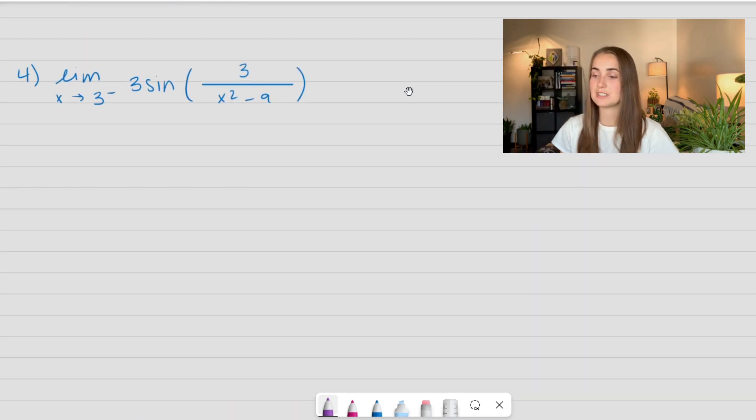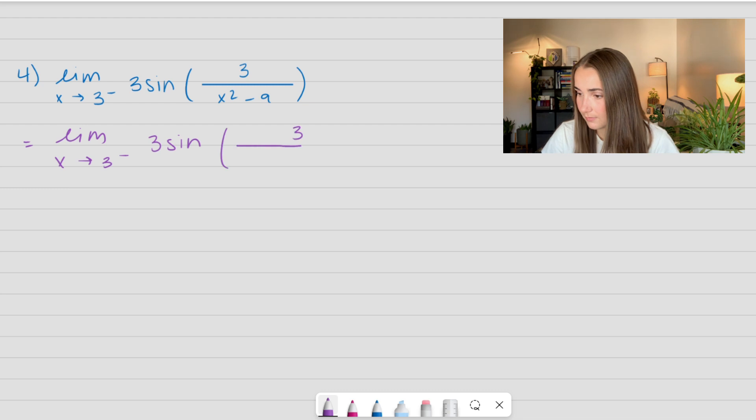Let's go ahead and see another example. We have the limit as x approaches 3 from the left of 3 times sine of 3 over x squared minus 9. Always what I suggest trying to do is factoring it all. So limit as x approaches 3 from the left. And let's go ahead and look at our issue. What is our issue number?